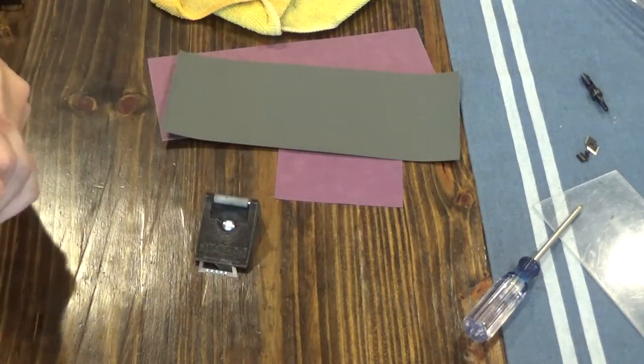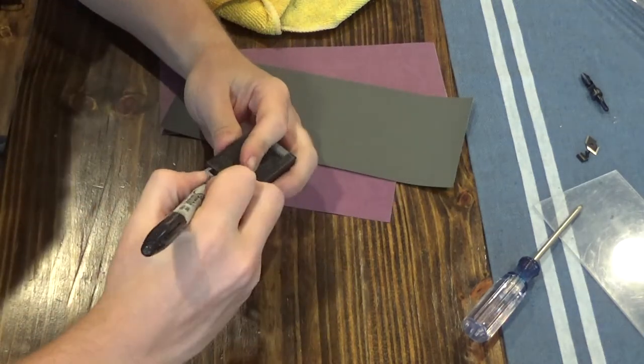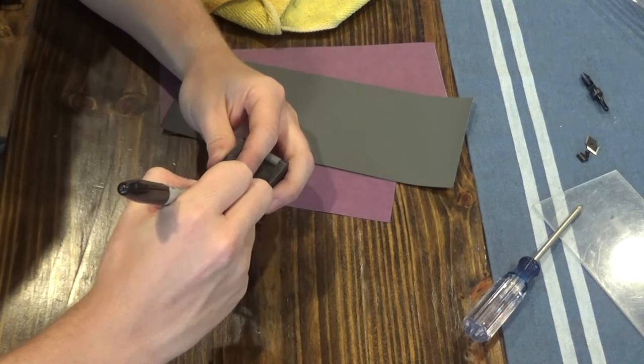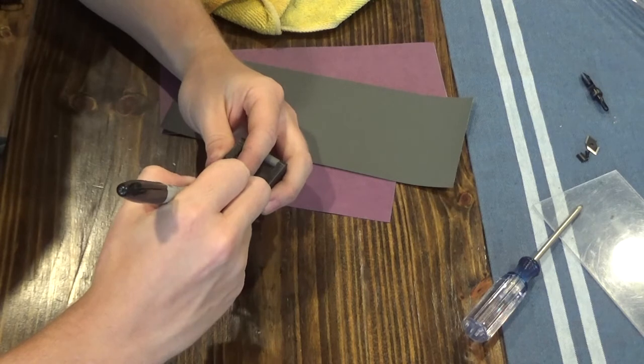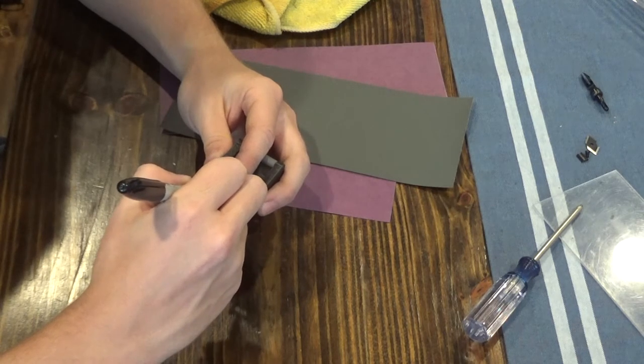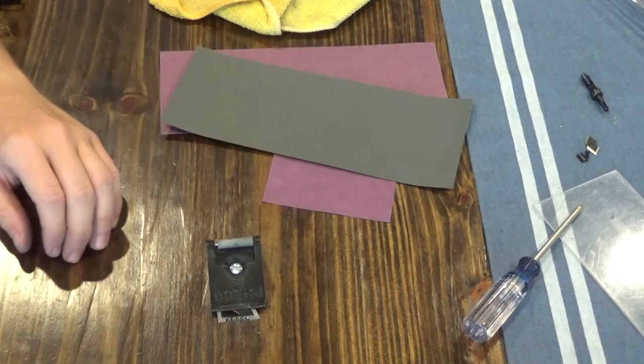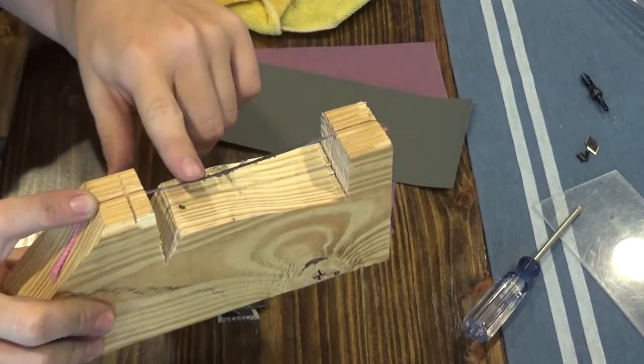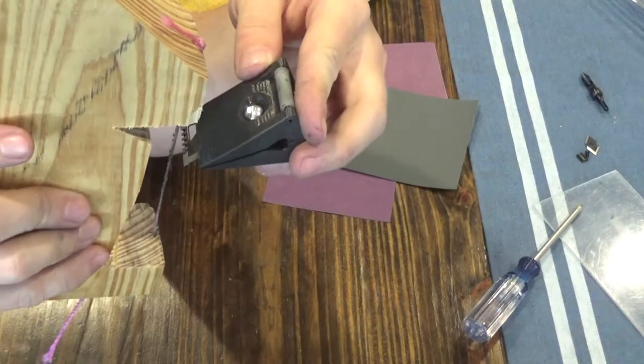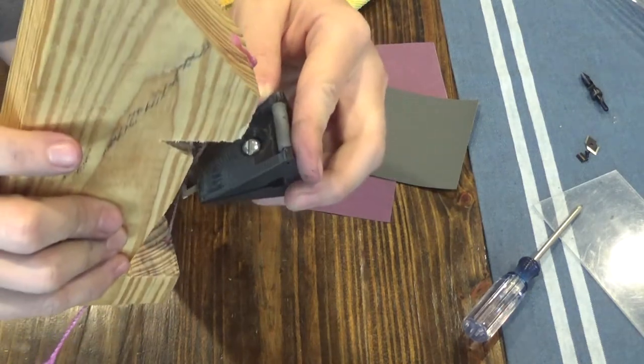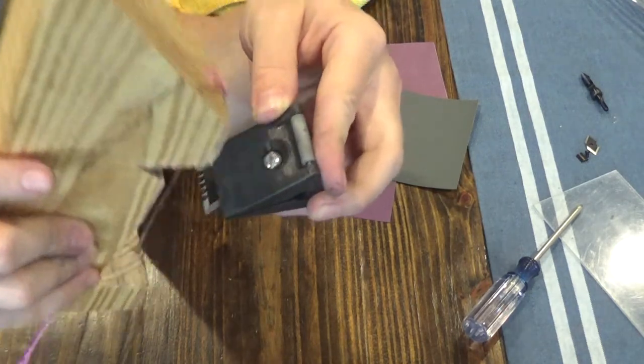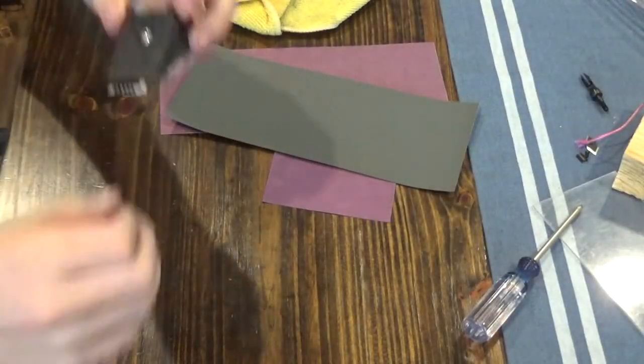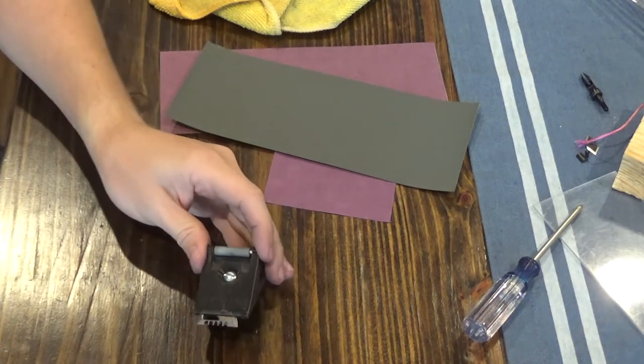To do the serrations first, we're going to take a sharpie and mark the serrations. This gives you an idea once you've cleaned them up nicely—there should be no sharpie remaining inside the serrations. Next you have two options. As I showed in my other video, I made this little device with a string on it and I put some green compound. You'll just slide it kind of like this to clean it up, and you'll see the sharpie starting to get removed.